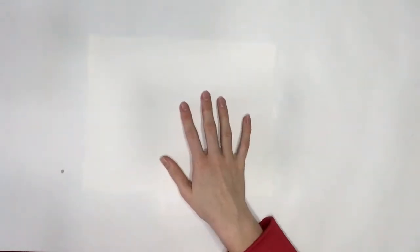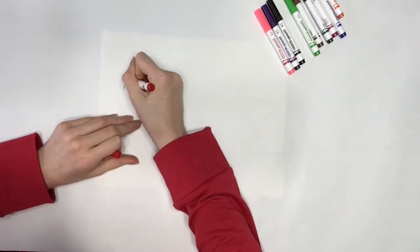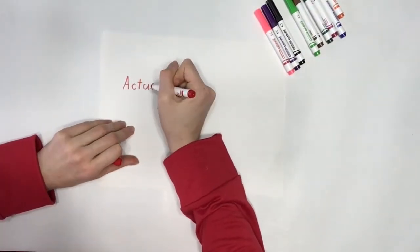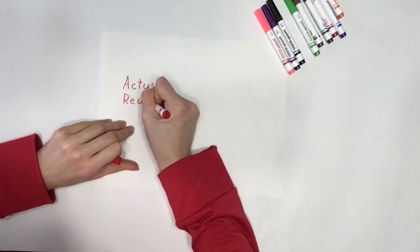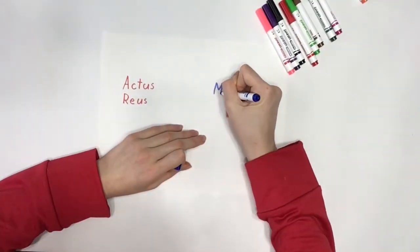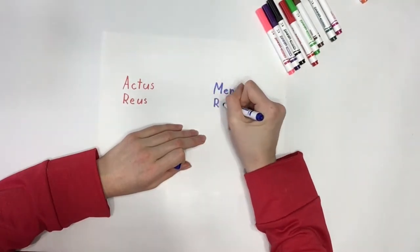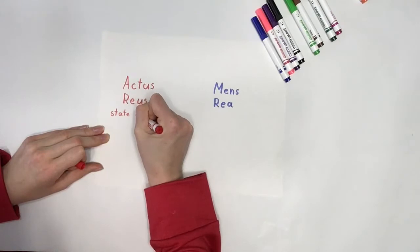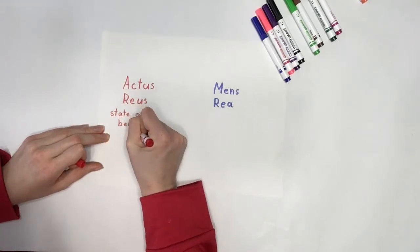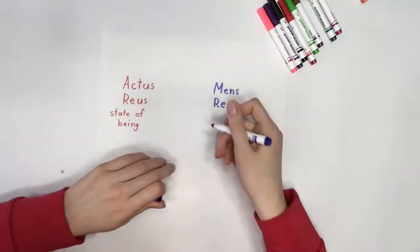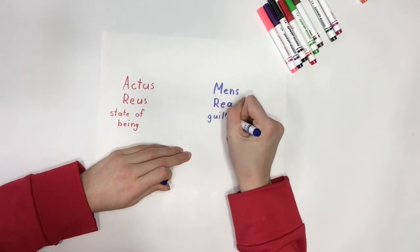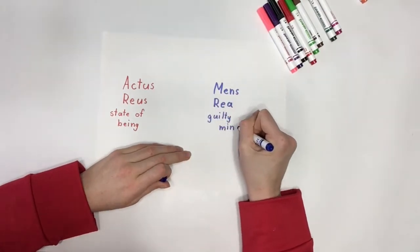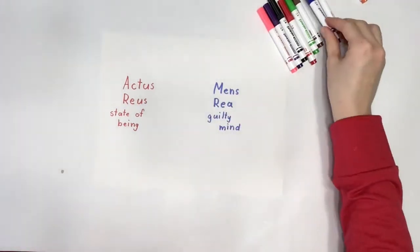The next important thing to mention is actus reus and mens rea — because, of course, law loves to have its fancy Latin terms. Mens rea is the knowledge or intention to commit a crime, not the actual act. The act, conduct, or state of being of committing a crime is actus reus. Basically, mens rea is the mentality and guilty mind behind committing a crime, while actus reus is the action of committing it. In order for a person to be convicted, the Crown needs to prove that both of these were present.